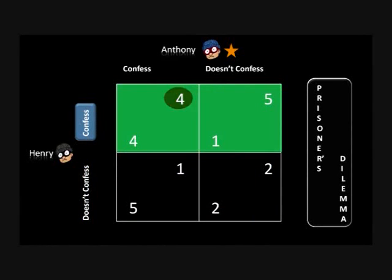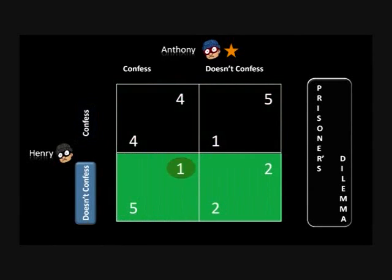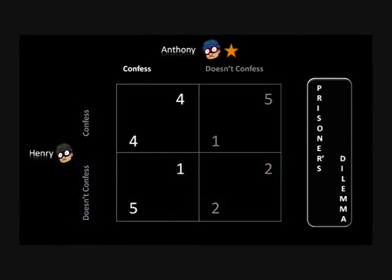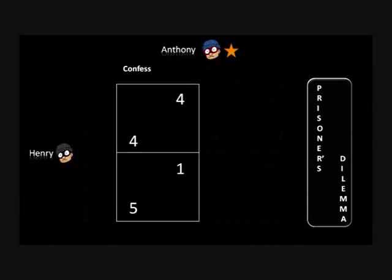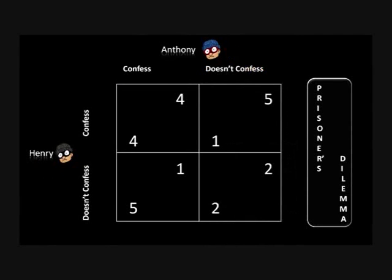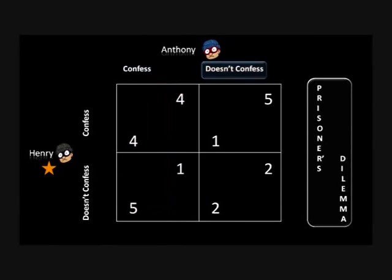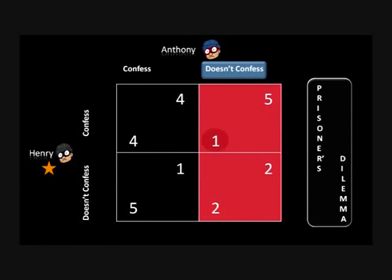So we see, irrespective of the other prisoner's move, Anthony would be more intelligent in speaking out rather than not. It doesn't require a Sherlock Holmes to figure out that similarly, the best individual choice for Henry would be to confess.